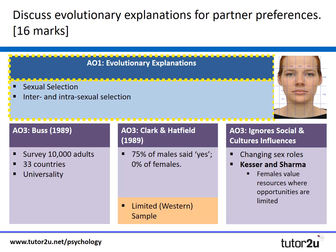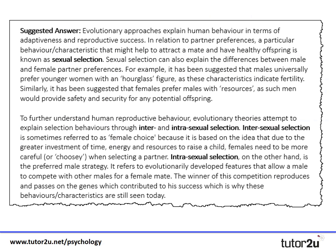Let's look at what a model answer might look like, starting with our AO1. This is quite a tricky essay question because there is a lot of specialist terminology that is quite difficult to always fully understand, but we need to make sure we're showing the examiner that we know this key terminology within the evolutionary explanation and, more importantly, we know how to use it, ideally with some examples.